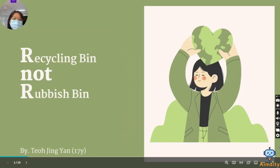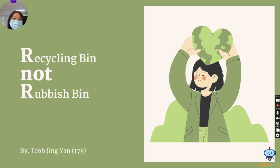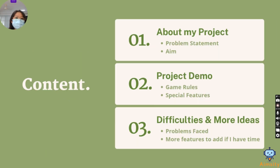Good morning everyone. My name is Teo Jingyan and I'm 17 years old. My project title is R0R. Today I'm going to talk about my project and I will show my project demo, the difficulties, and more ideas of this project.